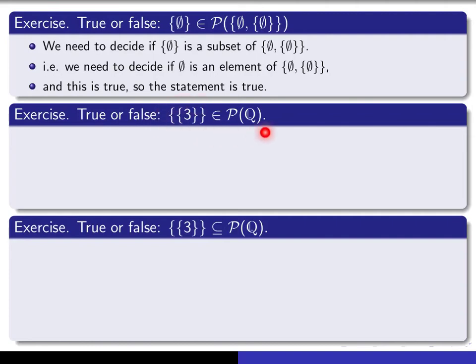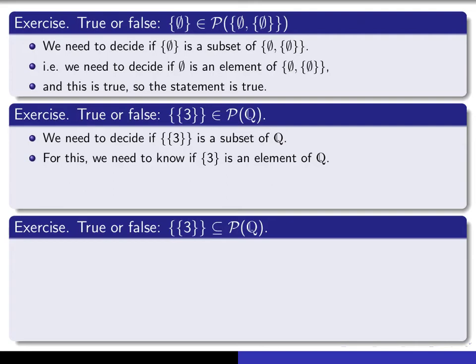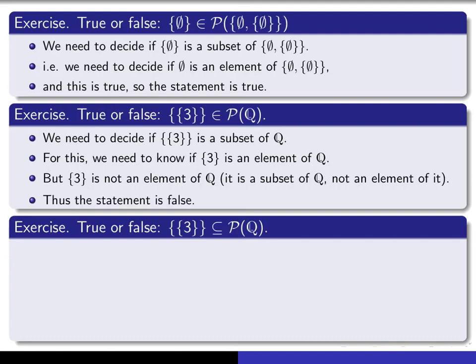Now let's look at the next statement. Is it true that this thing is an element of the power set? The power set of Q means the set of all subsets of the rational numbers. Well, you need to decide, in order to decide if it's an element of the power set, you have to decide if it's a subset of Q. So is this a subset of Q? Well, to be a subset of Q, it would mean that it's a set in which all its elements are elements of Q. Well, the only element of this set is that. And what kind of an object is that? That's a set consisting of the number 3. So you can see, that is not a rational number. It's a subset of the rational numbers, but by itself it is not an element of the rational numbers. And so this statement is false.